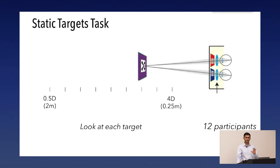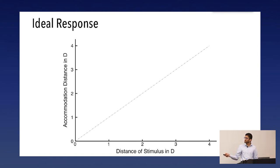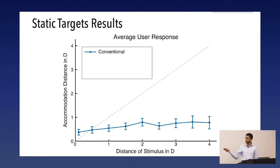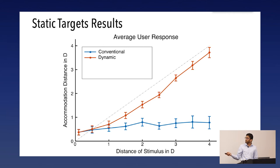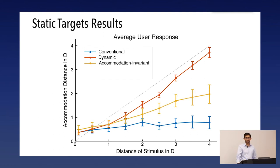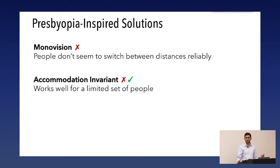To confirm this wasn't just an effect of predictable motion, we gave subjects static targets appearing randomly after a black screen at 0.5 diopter increments. With the conventional display, accommodation is basically flat because subjects continually try to accommodate to the far virtual image. With the dynamic display, the curve almost exactly matches the ideal. The accommodation-invariant display is again in between, consistent with AC/A ratios, and we conclude it works for a limited set of people depending on how their visual system is configured.